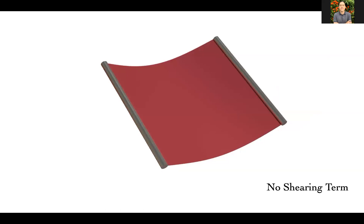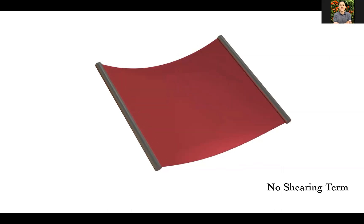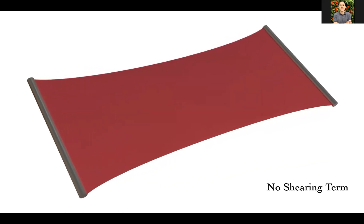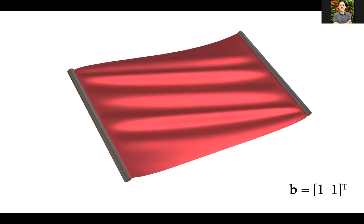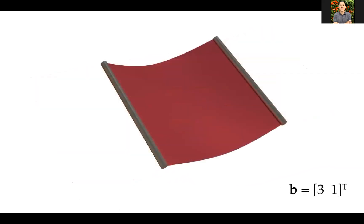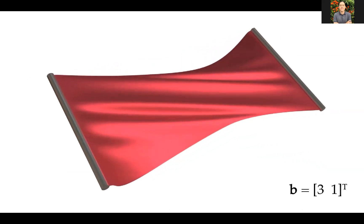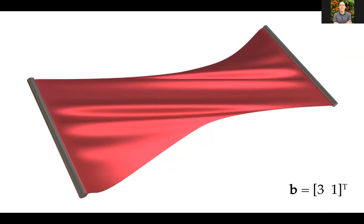The shearing term is important: omitting it eliminates all wrinkles in the stretch test, which looks wrong. We also derived stretching and shearing energies for principal-axis anisotropy and experimented with other anisotropy directions, producing unusual cloth behavior. This could be an attractive formulation for yarn homogenization work like the paper at SIGGRAPH this year.